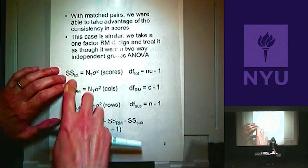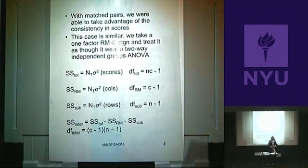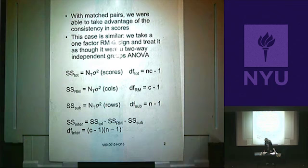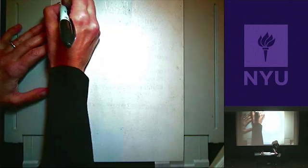If I wanted to find the sum of squares for the total, it would be NT times the variance of all the scores. I could put all 16 scores in, get the variance, multiply it by NT, and that would give it to me. Let's actually do these computations, because that will make it real clear.